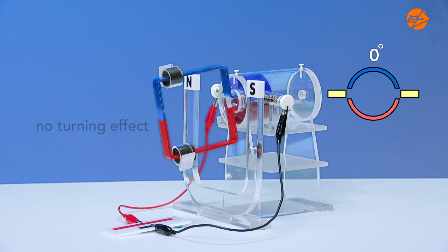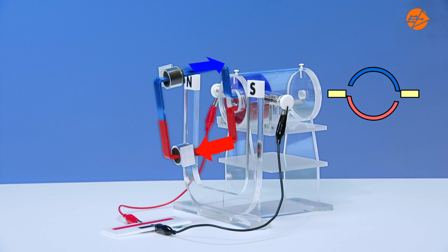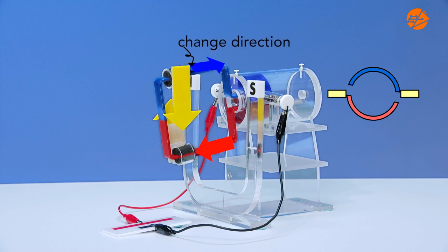However, the momentum causes the coil to continue its motion. As either half of the split ring crosses over to the other carbon brush, current passes through it again. Note that the current changes direction and consequently, the magnetic forces also change directions.